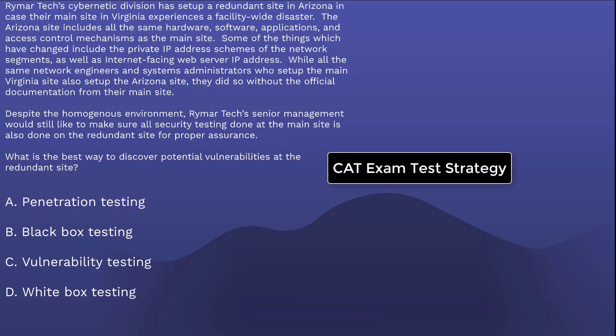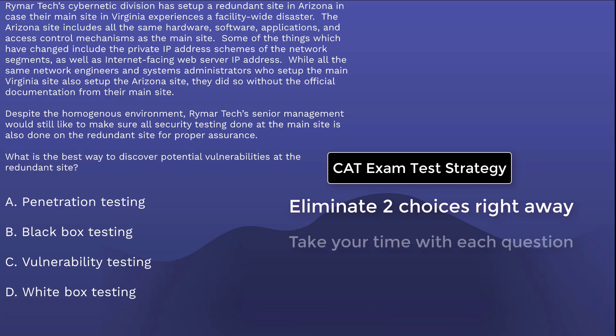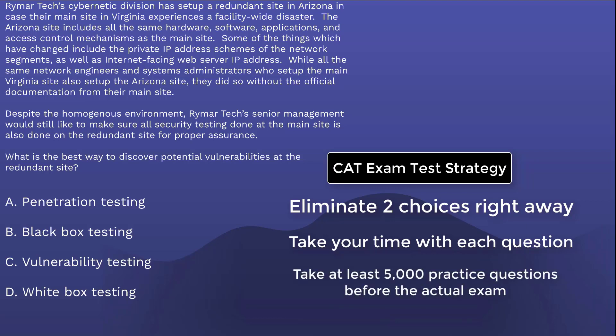The first thing you want to do is eliminate two of the choices right away — it gives you a way better shot at getting the answer right. And since you'll be taking the new CAT exam, you can't go back a question. You want to get the questions right after a thorough analysis of all of them. The more you do this with each practice question, the faster and more efficiently you'll be able to do it on the real exam. This is why I recommend taking at least 5,000 practice questions before taking the real exam.